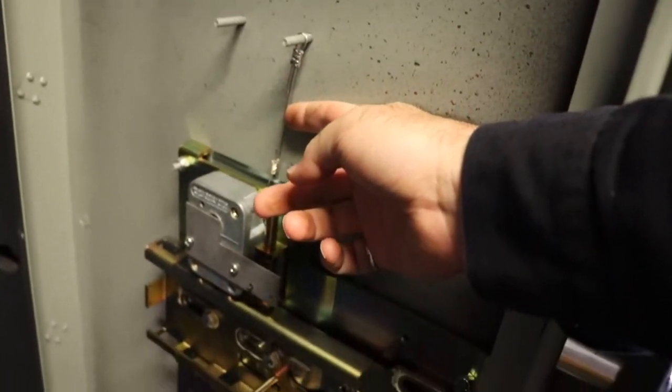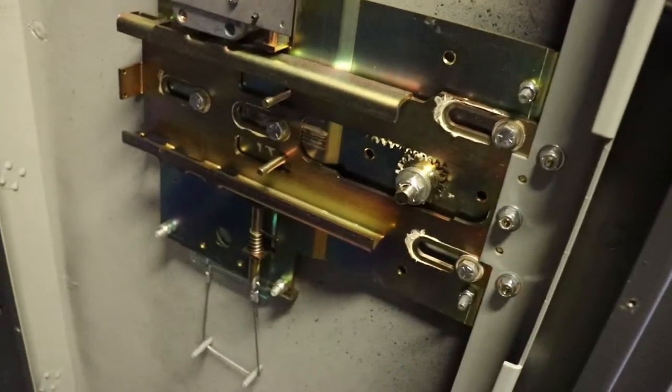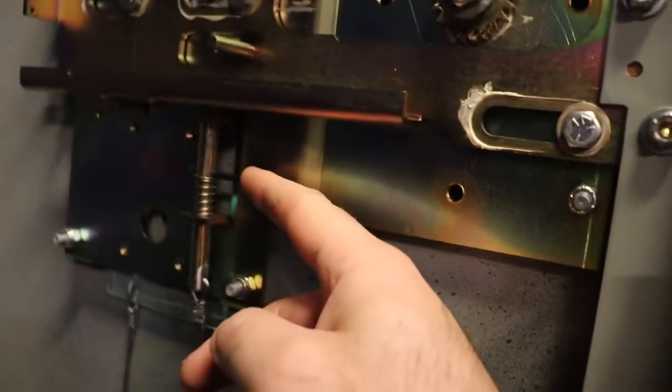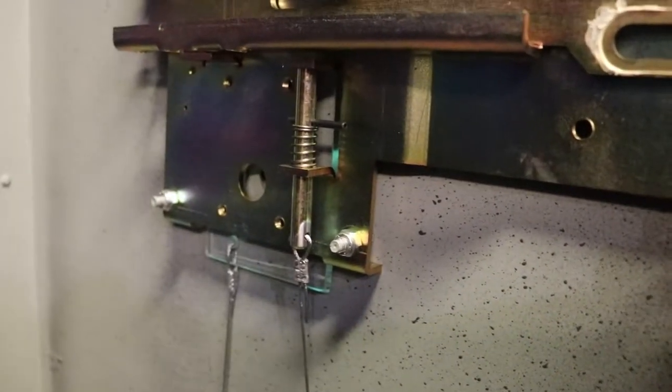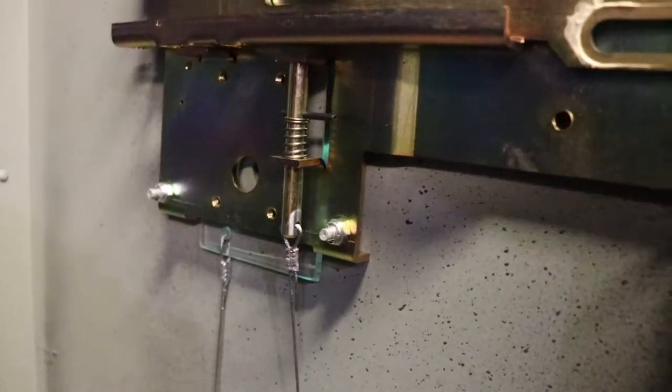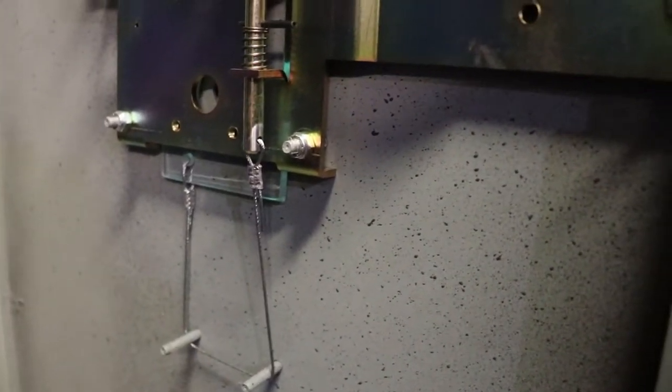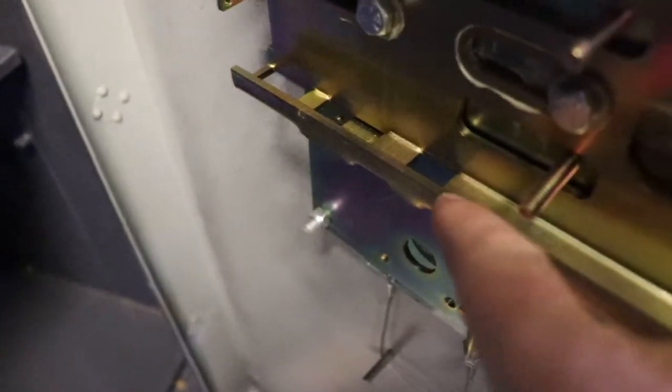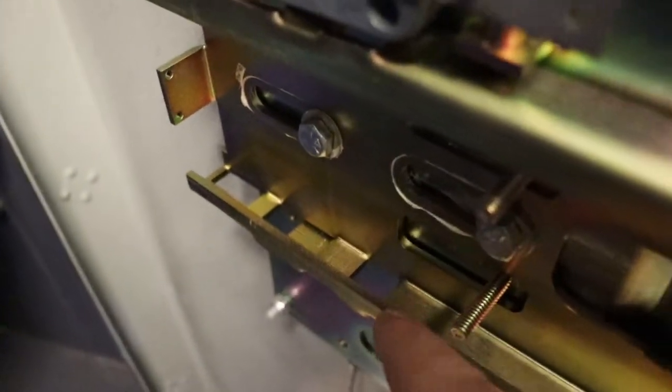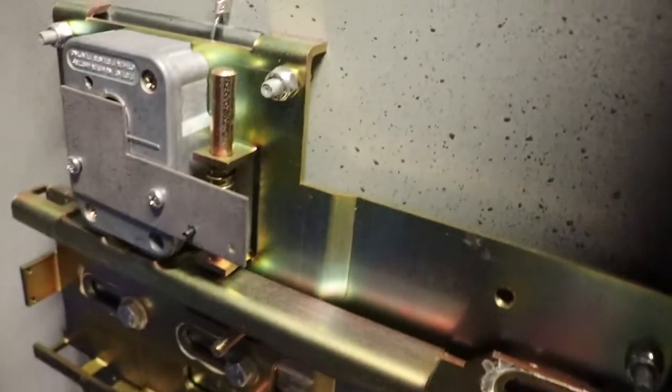So I got some aircraft cable here. There's no fusible links in this. It's just it has a second pin here that is tied to the glass relocker that'll drop into one of these locations here and make it impossible to open.